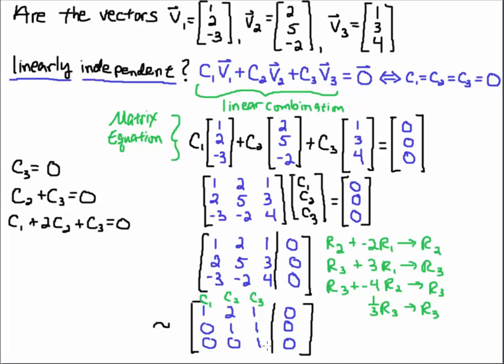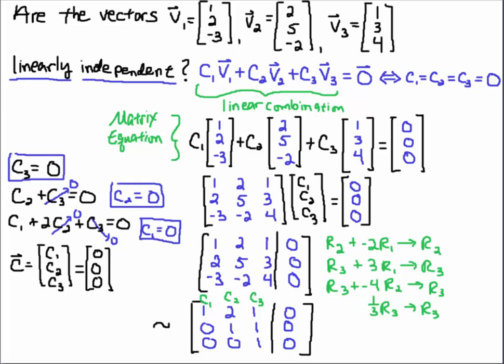The only solution that works for this system is when I set C3 equal to 0. So now I do back substitution. That means I have C2 plus C3 equals 0, and then I have C1 plus 2C2 plus C3 equals 0. I set C3 equal to 0. Since C3 is equal to 0, that means C2 is equal to 0. Since C2 and C3 are equal to 0, that means C1 is equal to 0 as well.